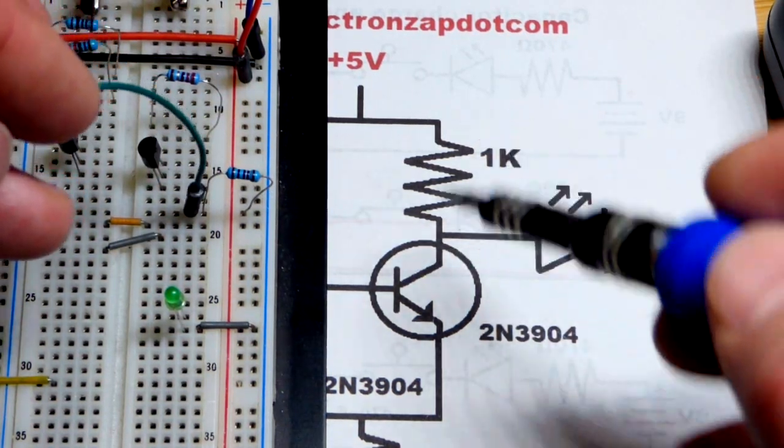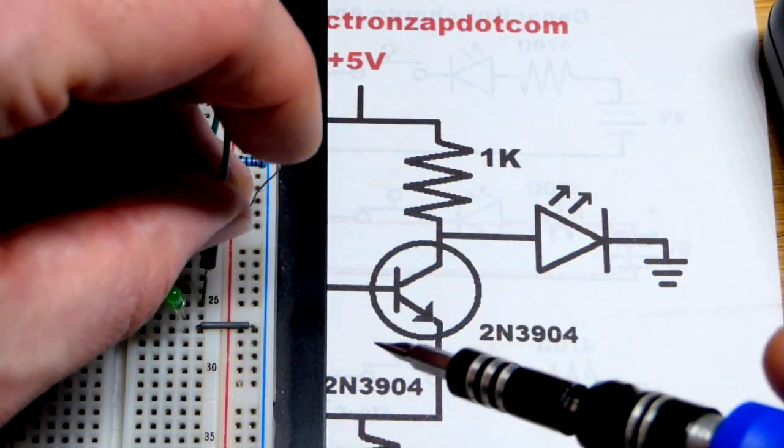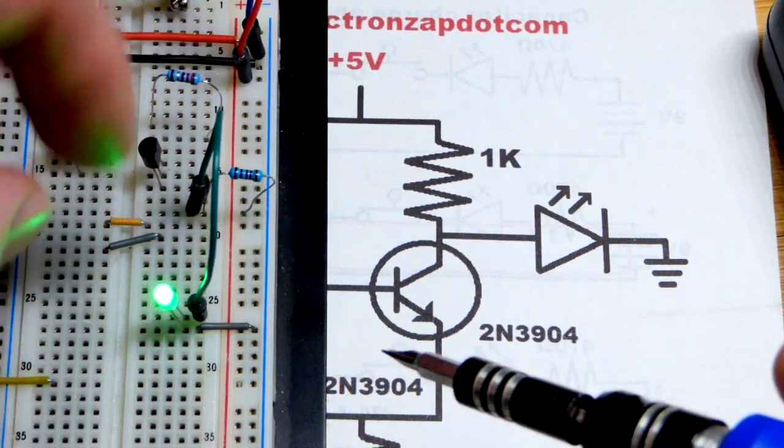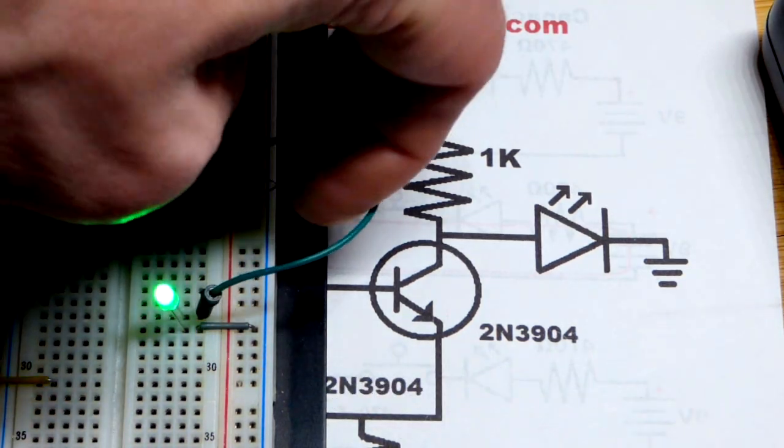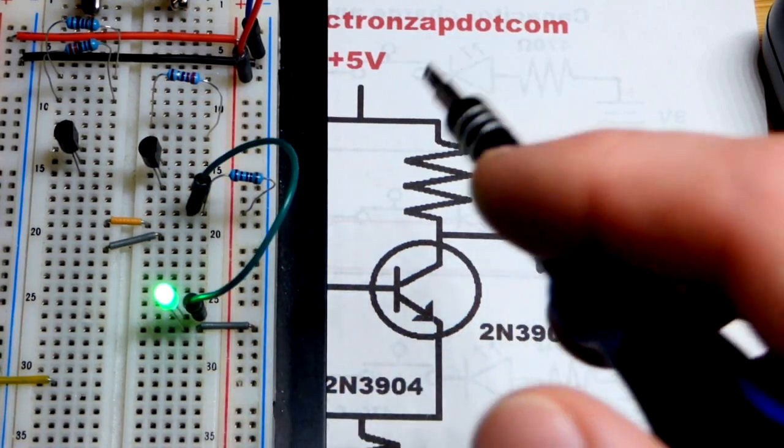Put it to the resistor. It's a 1000 ohm resistor there, 1 kilo ohm. And put it to the LED. And you'll notice the LED is normally on right there.